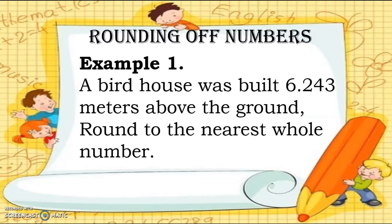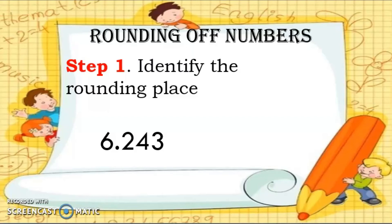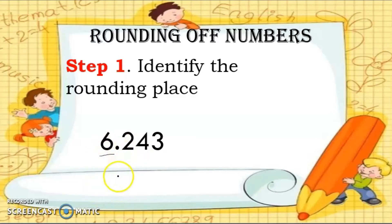The best way to understand the problem is by giving an example. A birdhouse was built 6 and 243 thousandths meters above the ground. Round to the nearest whole number. The problem asks you to round the number to the nearest whole number. Step 1: identify the rounding place. Our number is 6 and 243 thousandths, so the rounding place is 6, because we are asked to round to the nearest whole number.